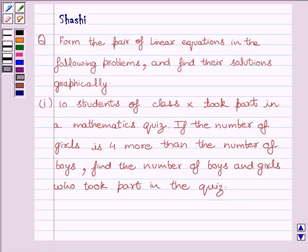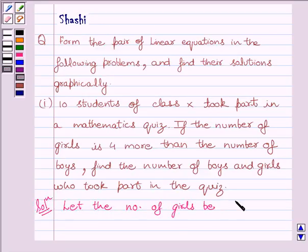After reading the question carefully, there are two unknown quantities in the question: the number of boys and the number of girls. Let us start with the solution now. Let the number of girls be equal to x, and let the number of boys be equal to y.